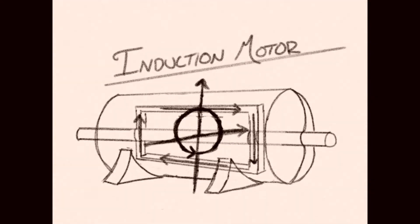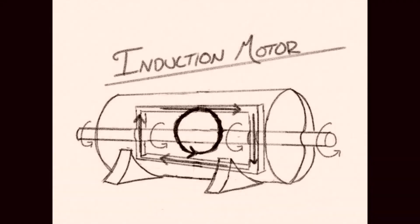In turn, this induces a separate current to flow within the moving rotor which is connected to the motor's output shaft. Due to the laws of electromagnetism, the rotor gains speed and spins synchronously with the rotating magnetic field, thus producing power for the motor.